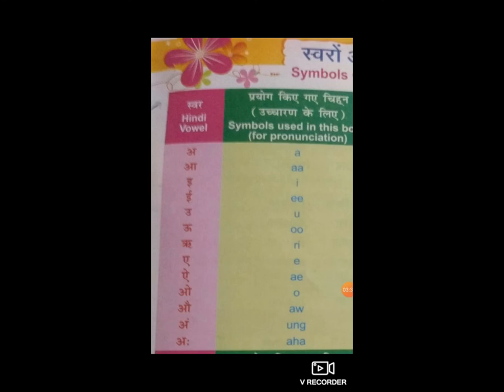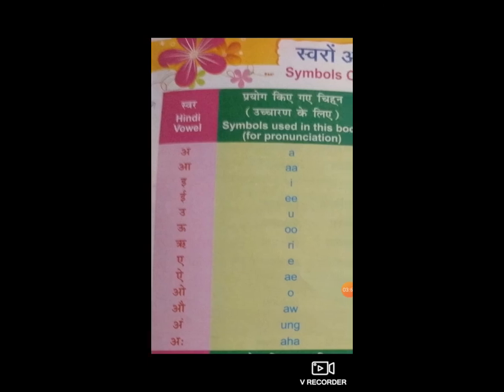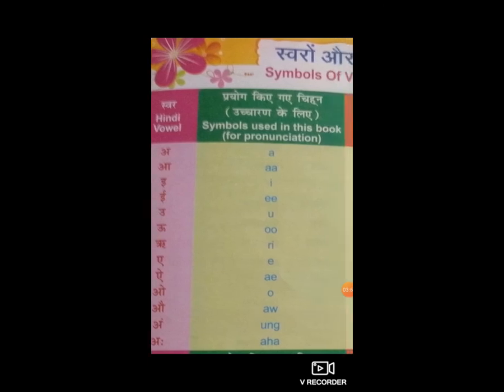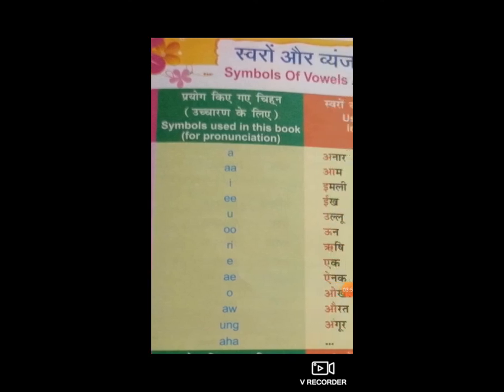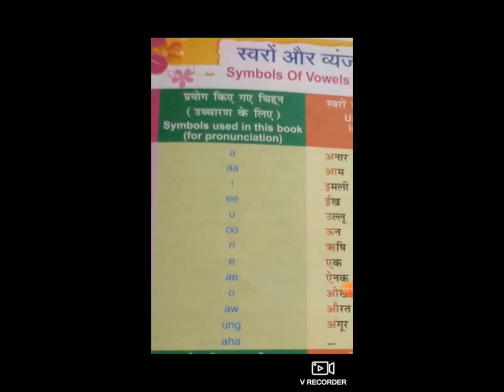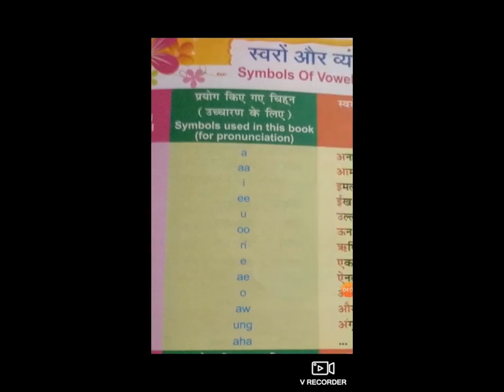अब होगा last में 'अः'। अ के बाजू में जो दो छोटे-छोटे dot दिये गए उसको विसर्ग बोला जाता है। क्या बोला जाता है बच्चो? विसर्ग। असे विसर्ग 'अः'। अः का प्रयोग symbol होगा AH। और उसको नमः, कः - इस तरह से ये word का pronunciation और उच्चारण होता है।